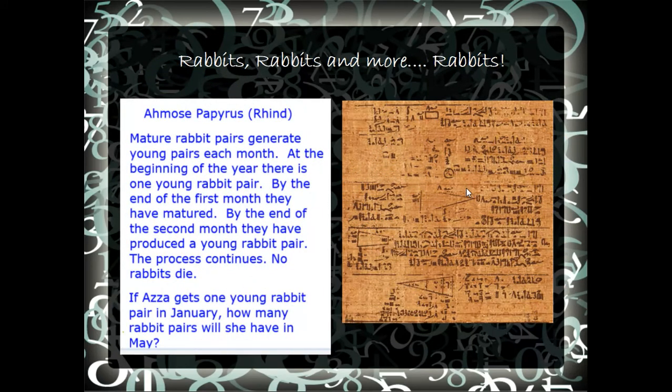Now we're on to the problem. Rabbits, rabbits, and more rabbits. This problem came from the Ahmes Papyrus Rhind, right here. And the problem is, mature rabbits generate young rabbit, young pairs each month. At the beginning of the year, there is one young rabbit pair. By the end of the first month, they have matured. By the end of the second month, they have produced a young rabbit pair. The process continues. No rabbits die. If Aza gets one young rabbit pair in January, how many rabbit pairs will she have in May?